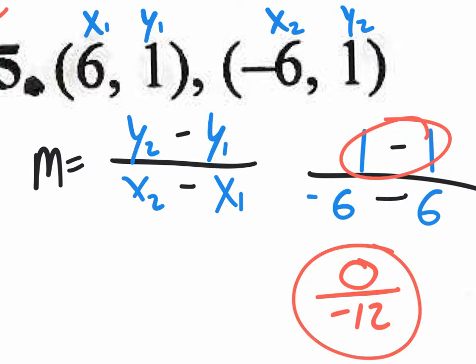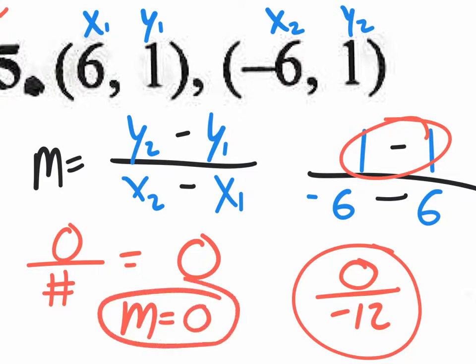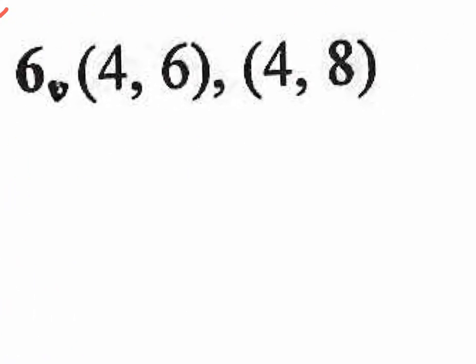When you have zero over negative twelve, the final answer is zero. Zero divided by any number is zero, so you write m equals zero. Don't leave it as zero over negative twelve. Likewise, if zero is on the bottom — say the answer would have been 12 over zero — you write m equals undefined. If zero is on the bottom, it's undefined. If zero is on top, it's zero.